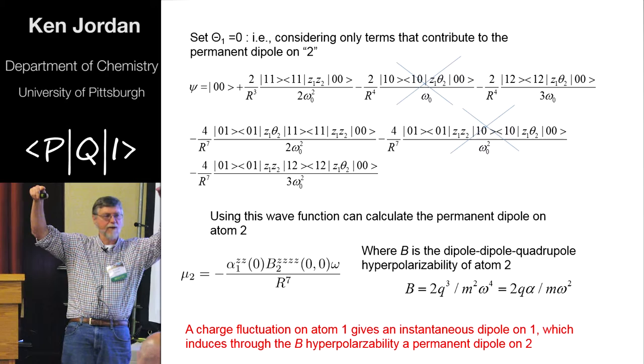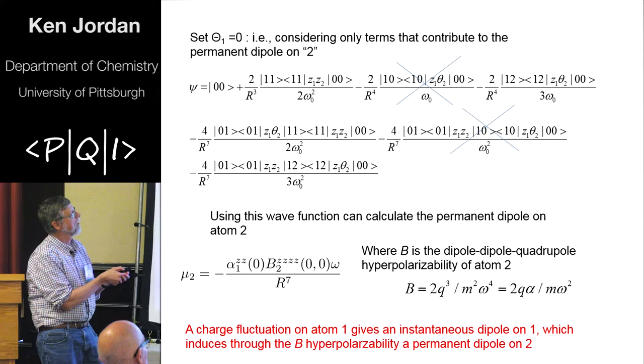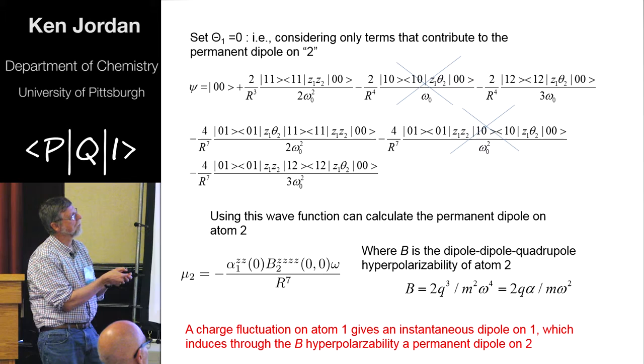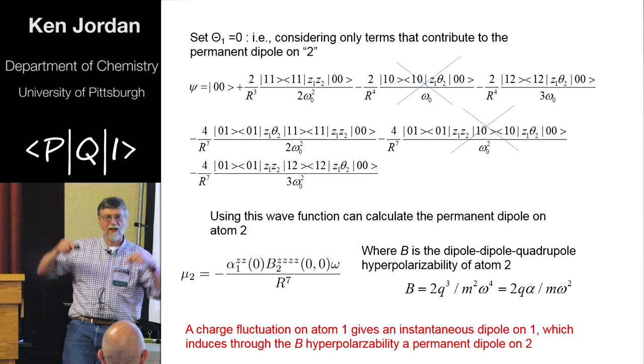So here's the wave function, we've worked out the wave function. These terms here turn out to be zero, but this is both oscillators in the ground state. If a one, the one-one means both oscillators are excited from the zero to one, so that's your dipole-allowed transition of each of the oscillators. But you also couple in, because of the quadrupole terms, you couple in excitations. If one oscillator is in the X level, the other one is, let's say, in the X squared level.